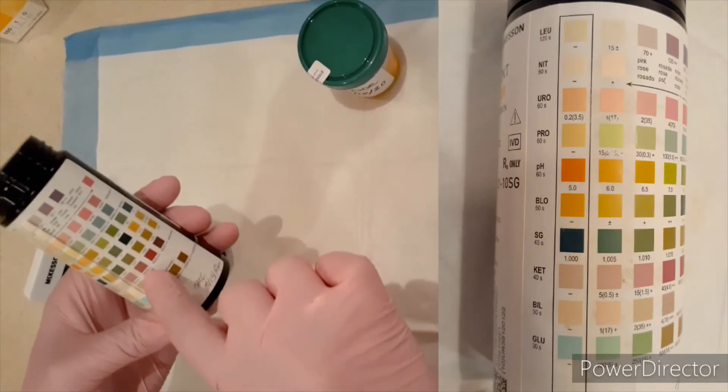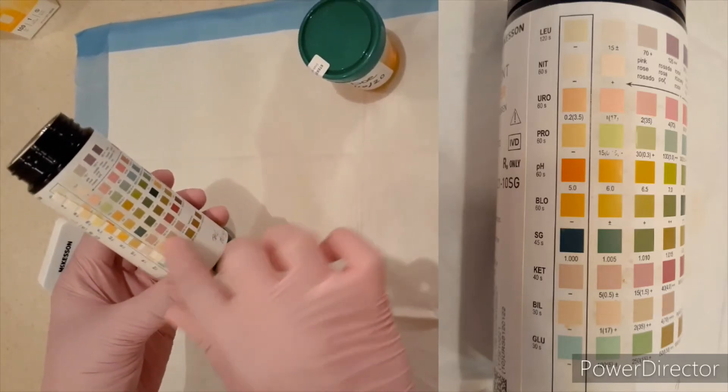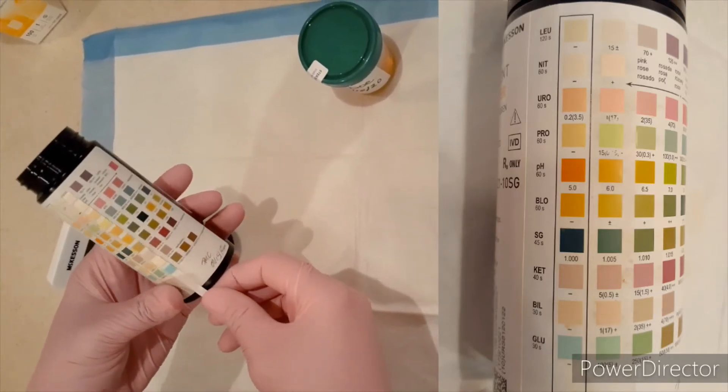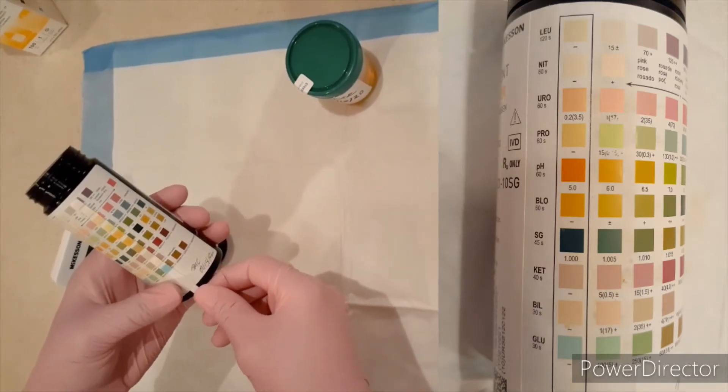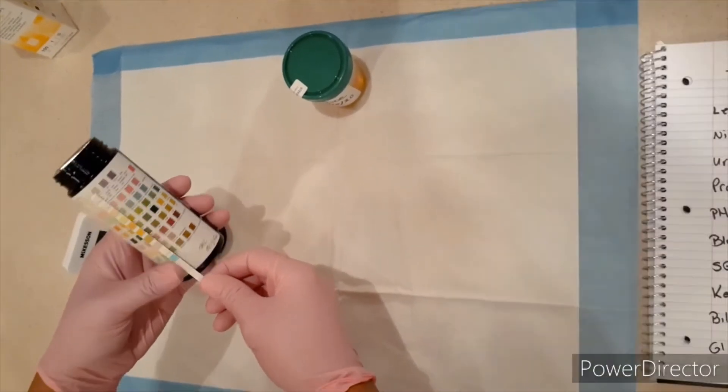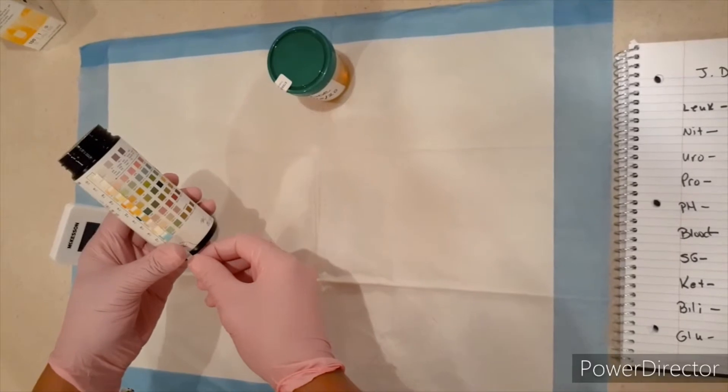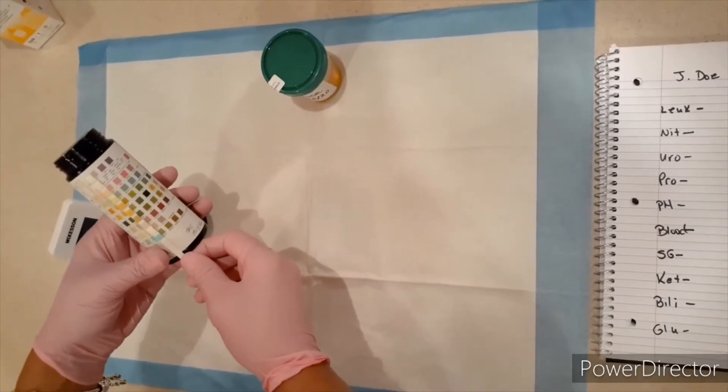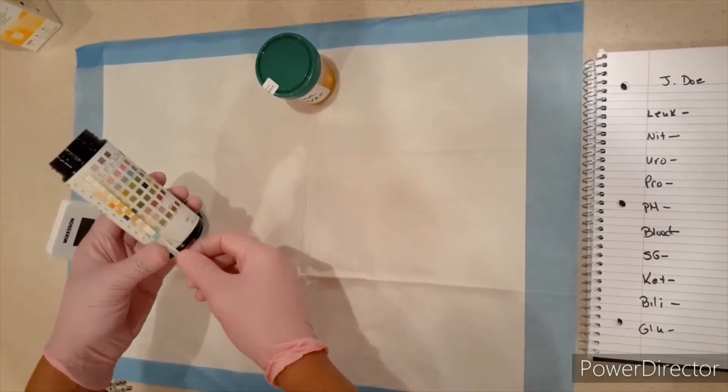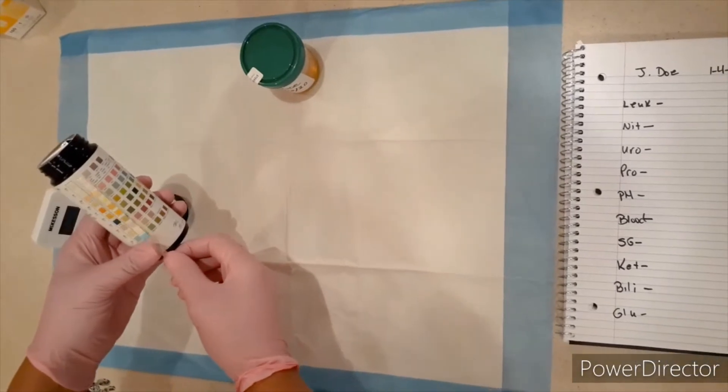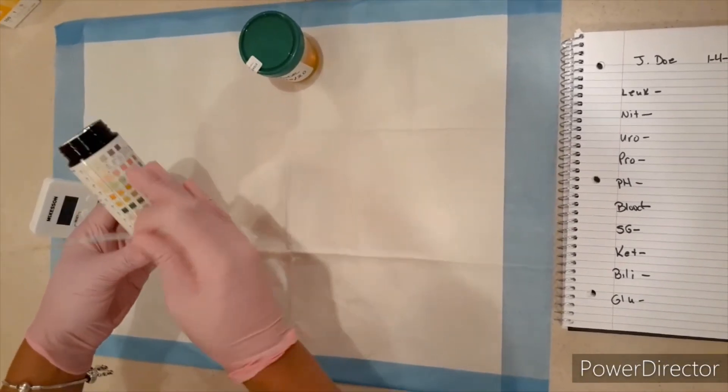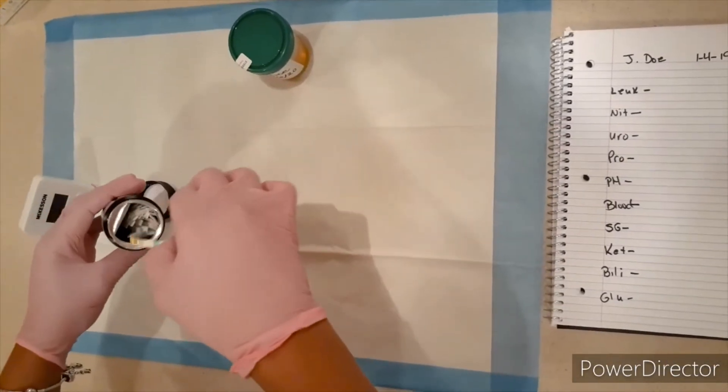Underneath each block are numbers. So whichever color the blocks match up to going across will be the result of that particular test. So that's another reason why I'm showing you ahead of time before I do the test, because we don't want to hold this strip up against the bottle after it has been dipped in urine, because of course we will contaminate the bottle.